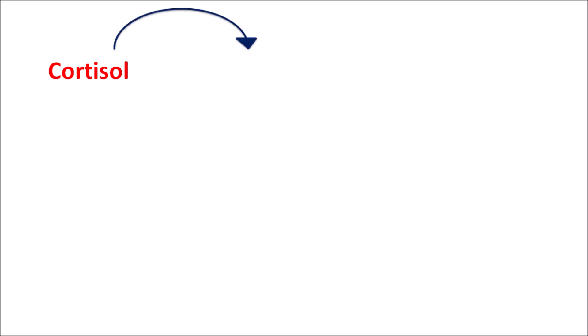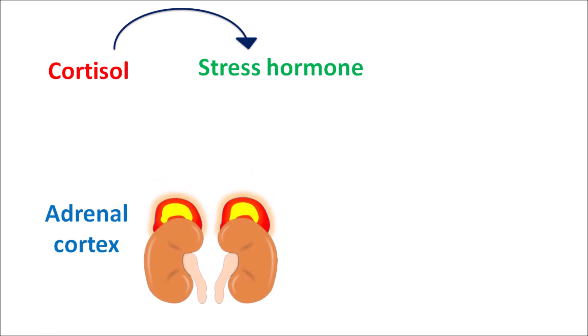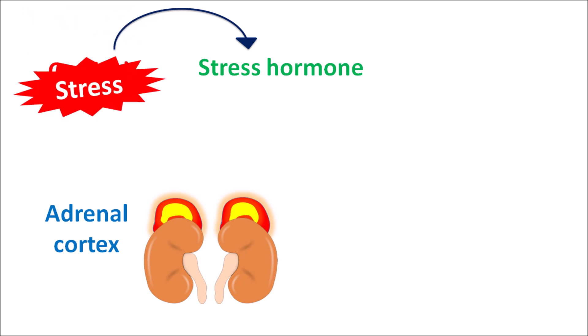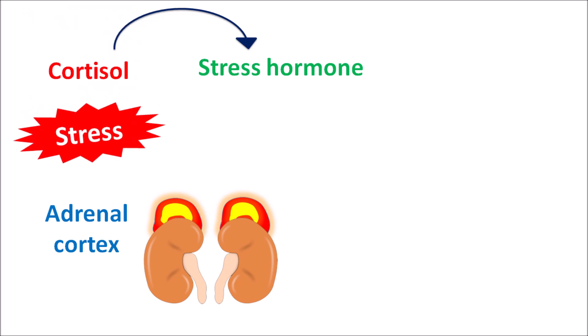Cortisol is one of the endogenous hormones which is considered a stress hormone. During stressful conditions, cortisol is released from the adrenal cortex. When there is a stress response it can stimulate the CNS, resulting in the stimulation of the adrenal cortex. From this adrenal cortex, two important mediators are released: epinephrine and cortisol.